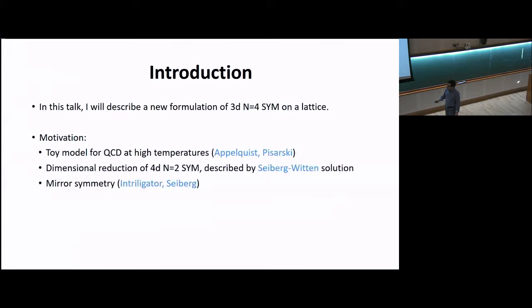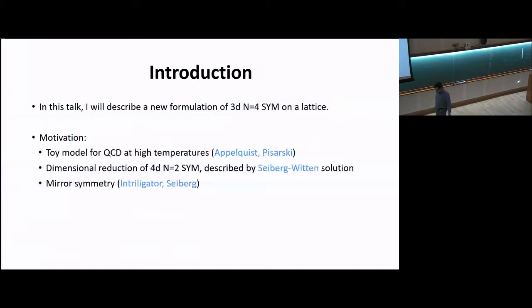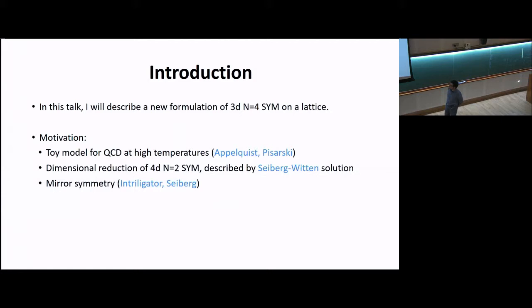In this talk, I'm actually going to be talking about a supersymmetric version of that, notably a half-maximal super Yang-Mills theory in three dimensions, which comes from the dimensional reduction of 4D N=2 super Yang-Mills, which also exhibits a very rich non-perturbative structure, as exhibited by the Seiberg-Witten solution. Furthermore, 3D N=4 theories are interesting in their own right because they exhibit mirror symmetry, which relates 3D theories that flow to the same IR fixed point. Lattice gauge theory provides a non-perturbative definition of quantum field theory, making it a promising approach to studying these dualities and non-perturbative phenomena more deeply.